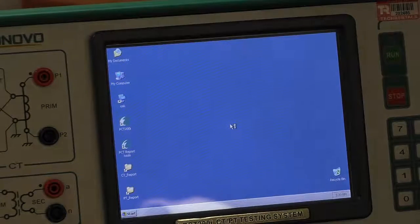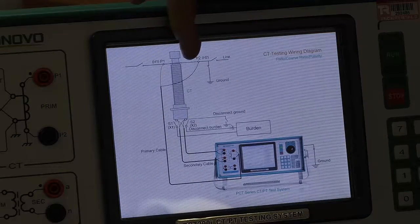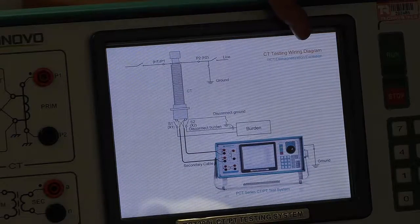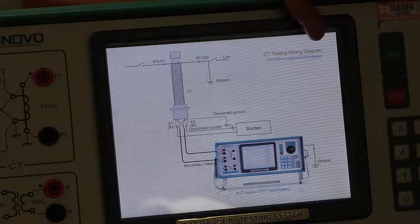Once this instrument has loaded the software, first thing it does, it gives us the wiring diagram as to how to wire up our current transformer. In this case, it switches between current and power transformer.